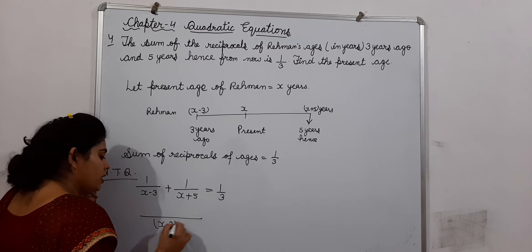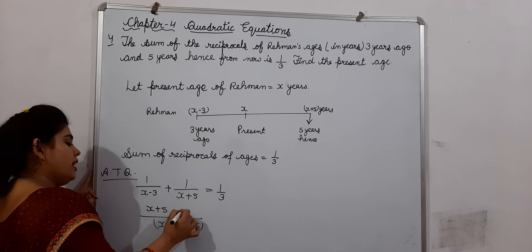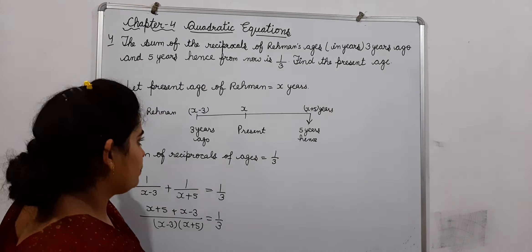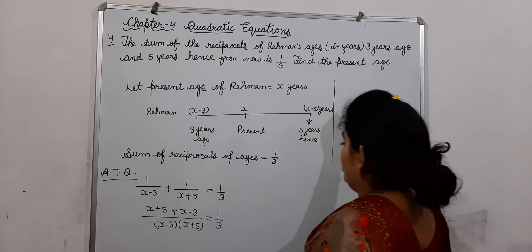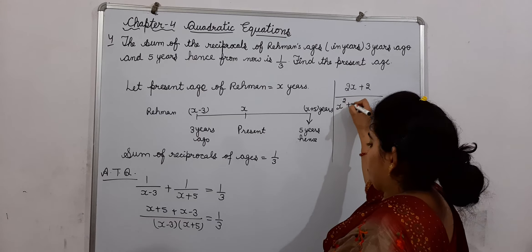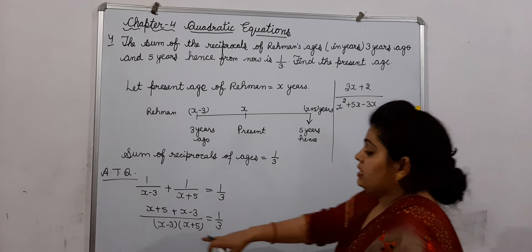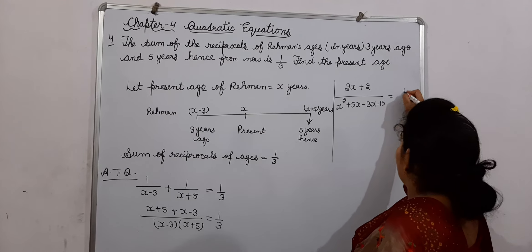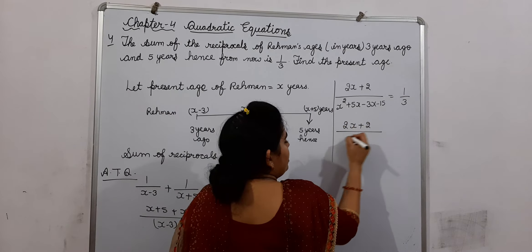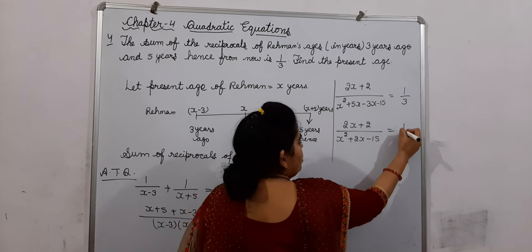Taking the LCM as (X minus 3) into (X plus 5), we get: 2X plus 2 divided by X squared plus 5X minus 3X minus 15, which equals 1 by 3. Simplifying: 2X plus 2 divided by X squared plus 2X minus 15 is equal to 1 by 3.